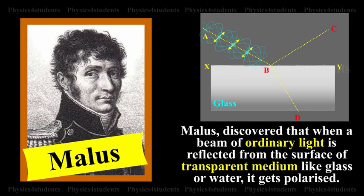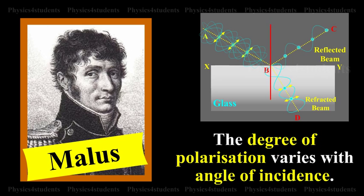Malus discovered that when a beam of ordinary light is reflected from the surface of transparent medium like glass or water, it gets polarized. The degree of polarization varies with angle of incidence.